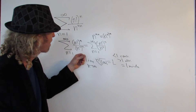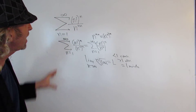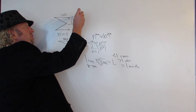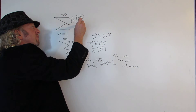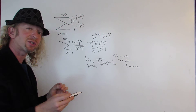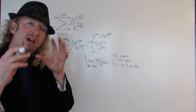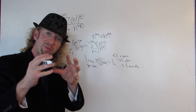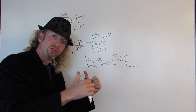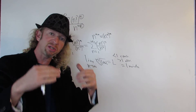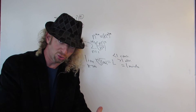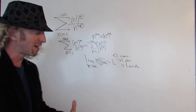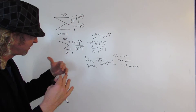So usually you use the root test when you have something to the nth power. At the beginning of the problem, right away, that's something you want to look for and notice. If you have everything to the nth power, that's when you can use the root test — that's typically when it's to your advantage.